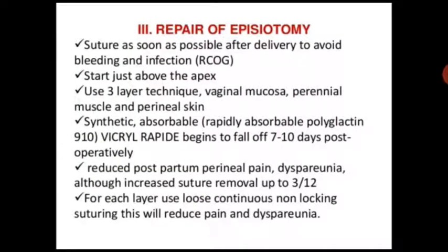Repair of episiotomy should be sutured as soon as possible after delivery to avoid bleeding and infection. Start just above the apex and use a three-layer technique covering vaginal mucosa, perineal muscles, and perineal skin. Use synthetic absorbable suture material — rapidly absorbable polyglyctin 910 — which falls away 7 to 10 days postoperatively, reducing postpartum perineal pain. Use loose continuous non-locking suturing for each layer to reduce pain.